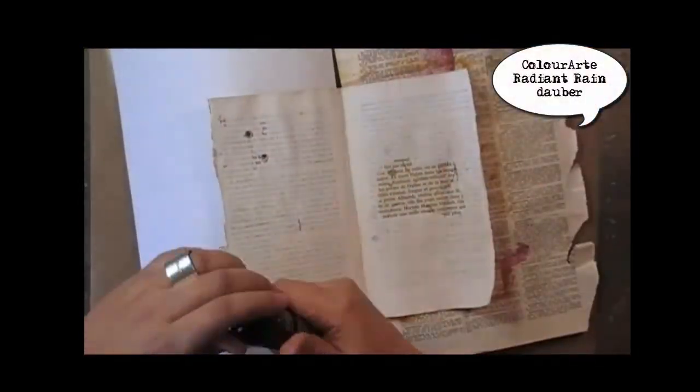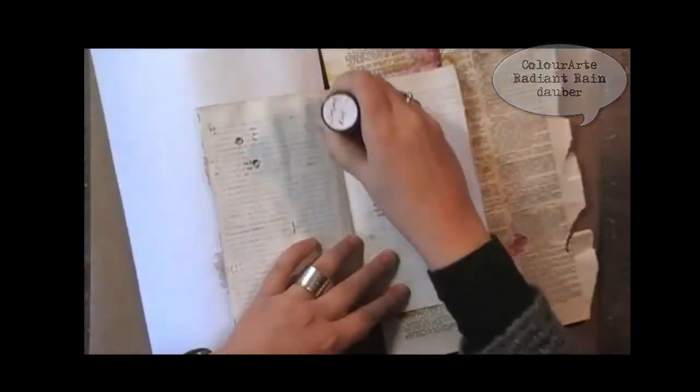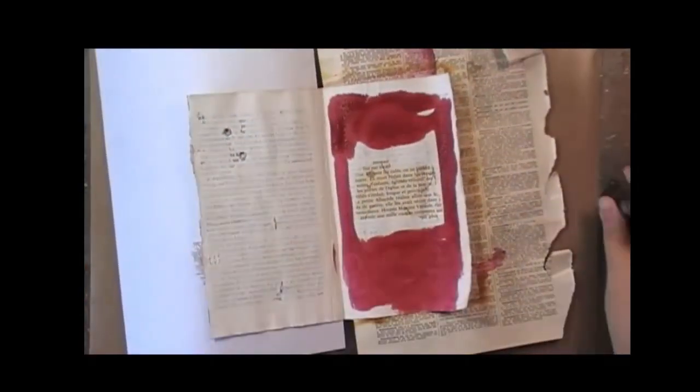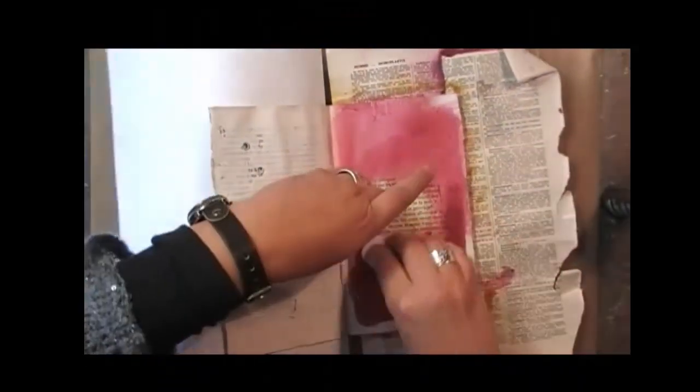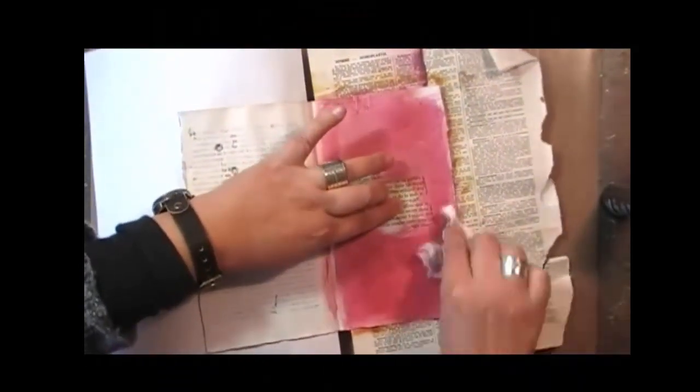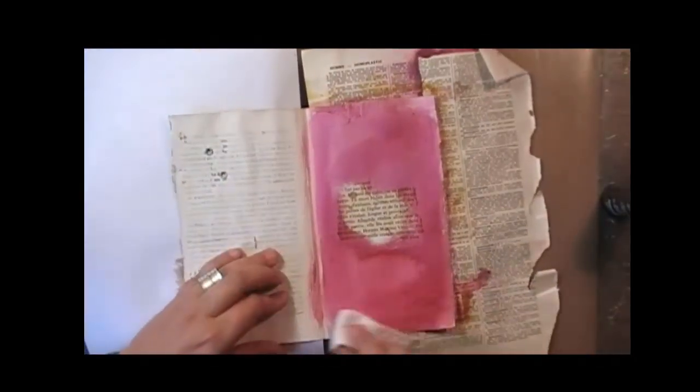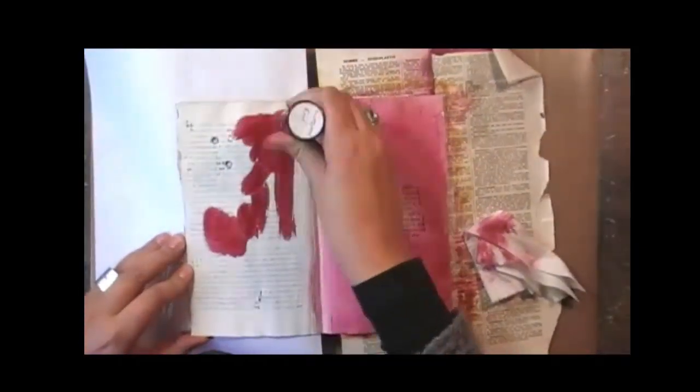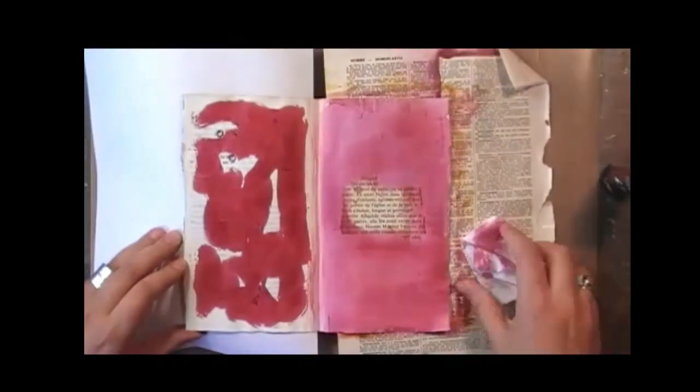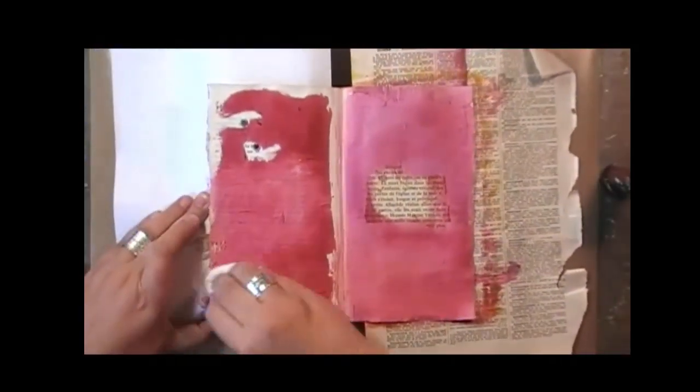Then this is color arts radiant rain but this is the dauber version, so this is actually a liquid acrylic. As long as it's not dry I can play around with it. When it's dried, it's an acrylic so it will become permanent. I'm trying to be quick using my baby wipe and spreading it around on top of the texture gesso.